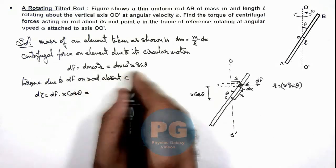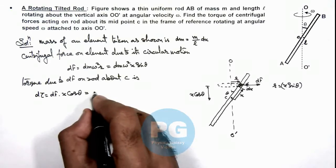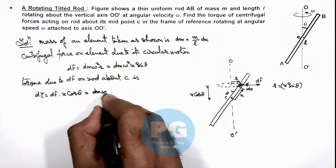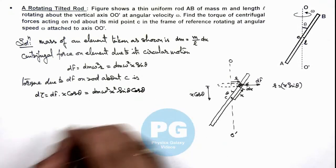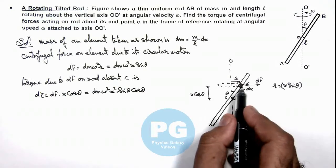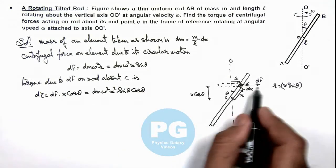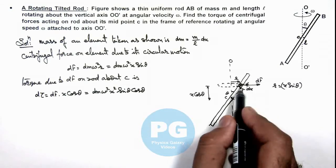If we substitute the value of df, this will be dm omega square x square sine theta cos theta. So if this is the torque acting on the rod due to the centrifugal force on element about C.